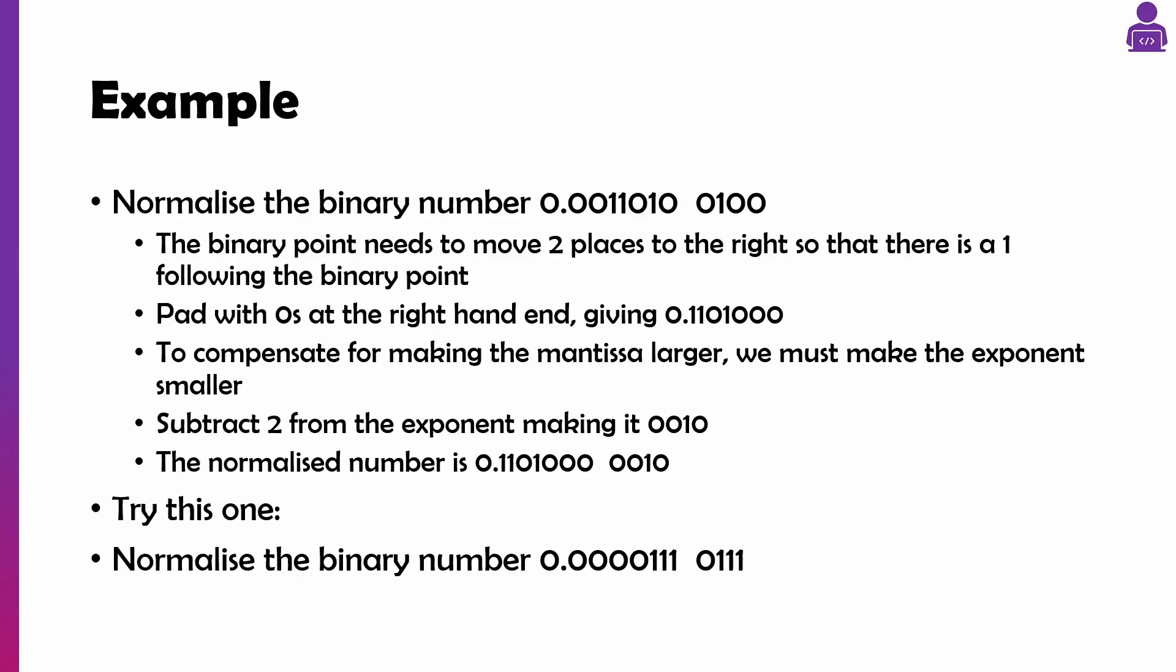So if you look here, we've got 0.0011010 and an exponent of four. Now these two zeros here are pointless, so what we can do is we can just get rid of them.